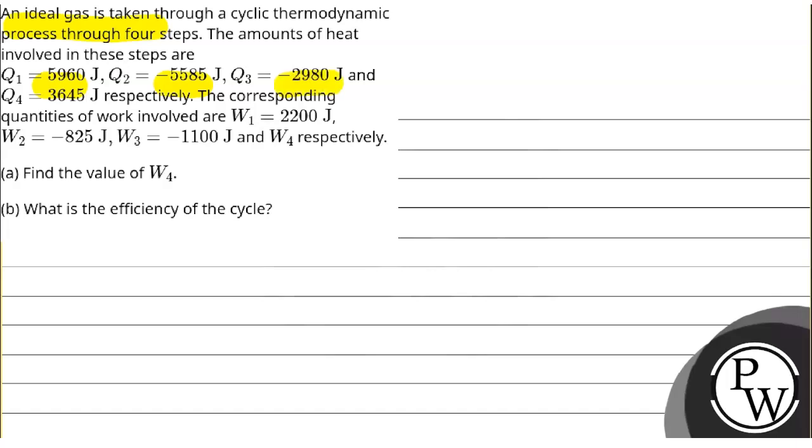Q3 is minus 2980 Joules and Q4 is 3645 Joules respectively.